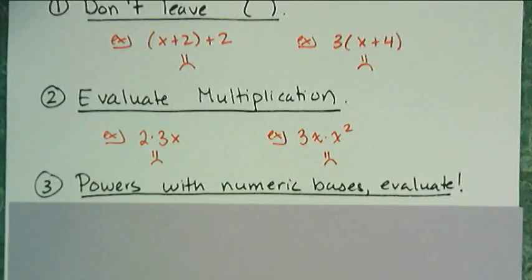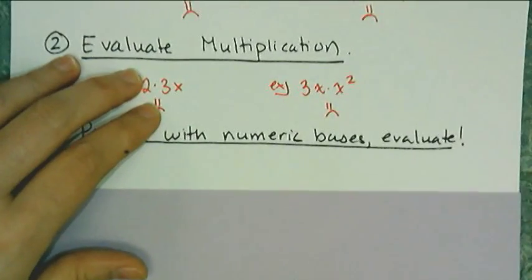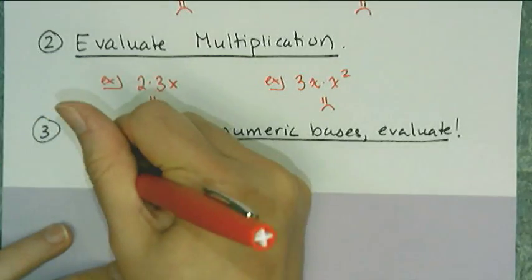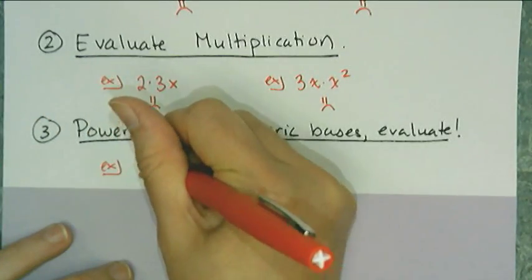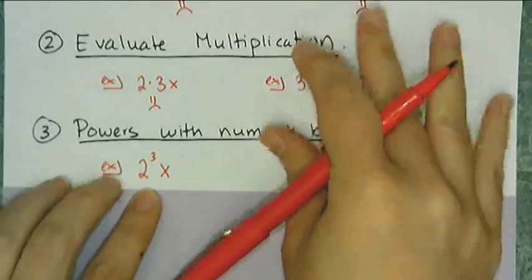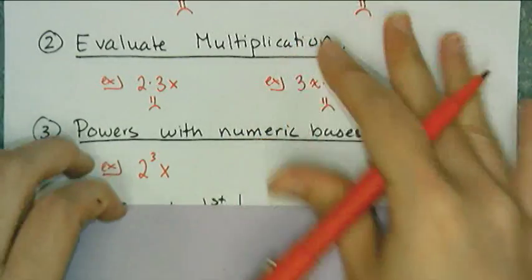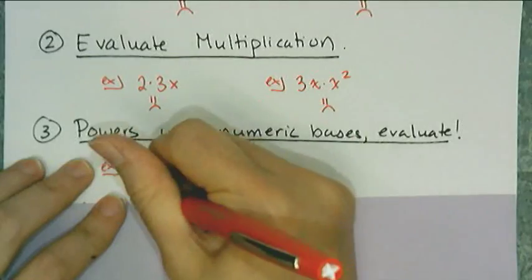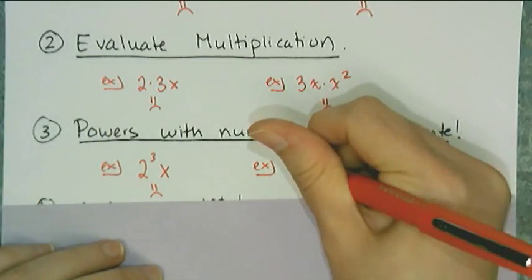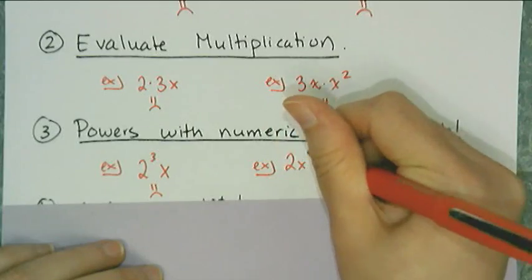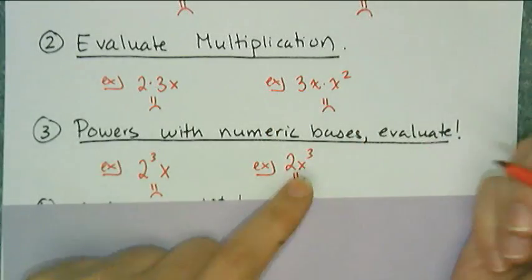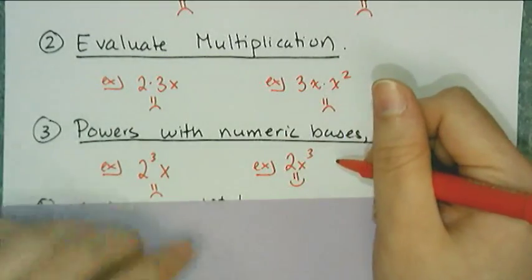Powers with numeric bases have to be evaluated. I don't want to see something like 2³x, because I know what 2 to the third power is — I can evaluate that multiplication. So that's a frowny face. But 2x³ is fine, because I don't know what x is, so I can't cube it. I'll just leave it as 2x³.